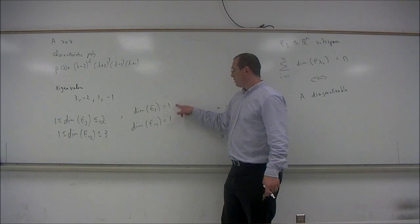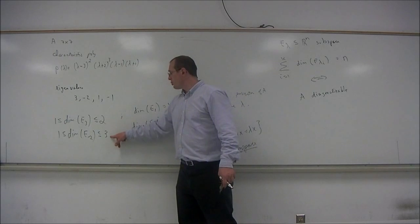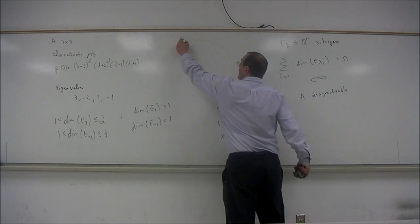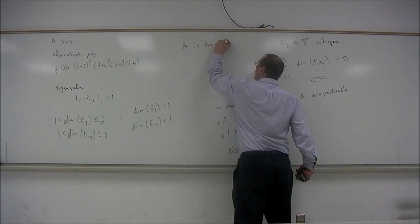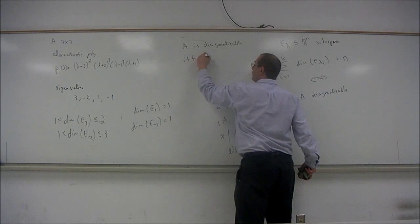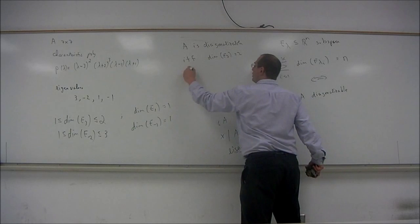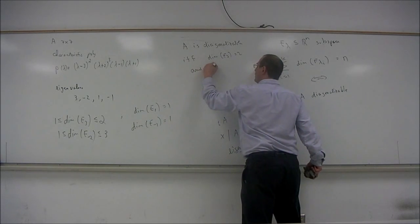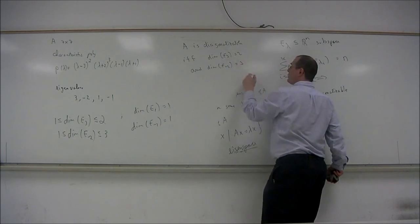And these two, well, there's no choice there, 1 will work. 1 plus 1 plus 2 plus 3 is 7. So, A is diagonalizable if, and only if, the dimension of e3 is 2, and the dimension of e sub-negative 2 is 3.